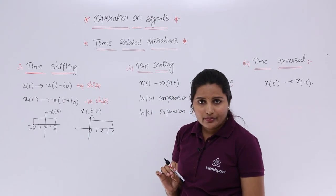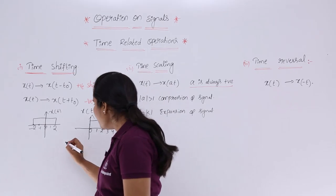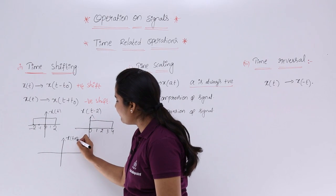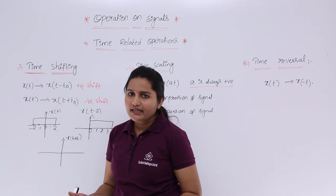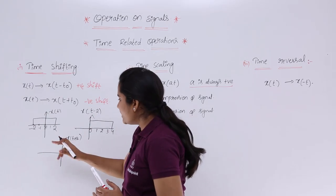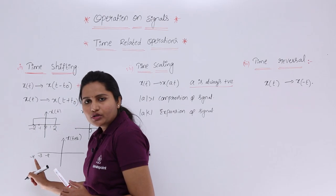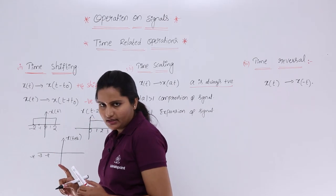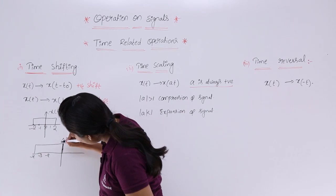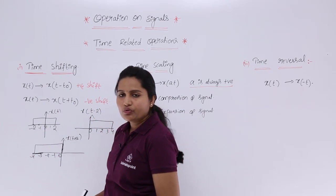In the same way, if you want to shift the same signal to the left — that is x(t plus 2) — then equating t plus 2 equal to 0 gives t equal to minus 2. So you need to shift from minus 2 to the left side by 2 positions: minus 2, minus 3, minus 4. Your resulting signal will go from 0 to minus 4.